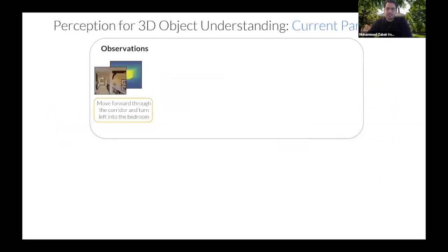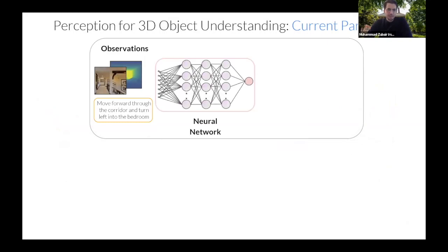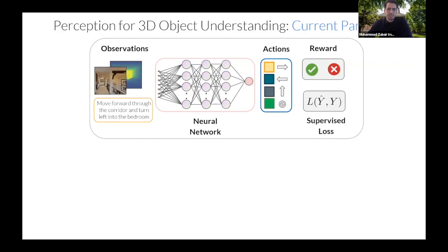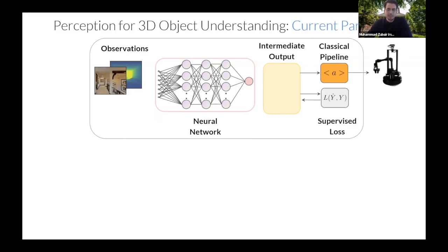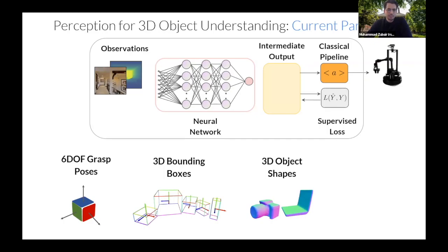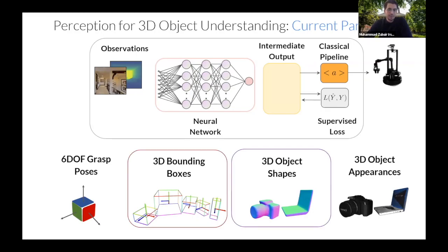Let's take a step back and review the embodied AI paradigm. Given an observation in the form of RGB depth or instructions, a neural network outputs actions, which can be solved using supervised learning or a reward paradigm. The task we study today deviates from the usual end-to-end learning paradigm — it learns an intermediate output, then uses a classical pipeline such as a robot controller to go to that location, grasp the object, and apply a rule-based policy. This intermediate output could be six-DOF grasp poses, 3D bounding boxes, 3D object shapes, or 3D object appearances. In the first work, we'll see how we can predict these two quantities in a very efficient way.